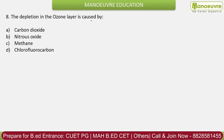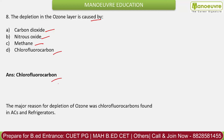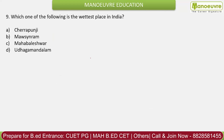Question 8: The depletion of the ozone layer is caused by? Options: carbon dioxide, nitrous oxide, methane, chlorofluorocarbon. The correct answer is chlorofluorocarbon (CFC). CFCs are the major cause of ozone layer depletion. The ozone layer protects us from harmful ultraviolet rays, which can cause skin cancer, eye disease, and other health problems.